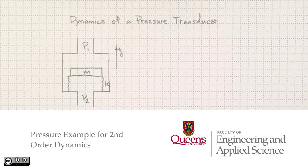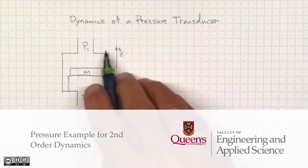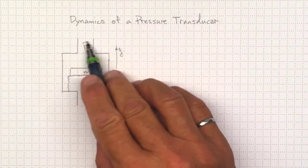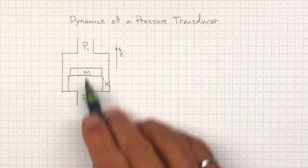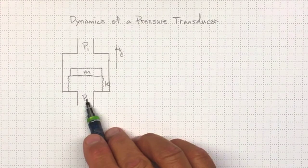The simplest possible pressure transducer would look something like this: a box with an inlet on top and bottom to allow us to expose the two sides to different pressures.